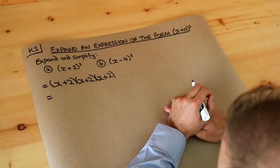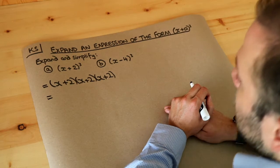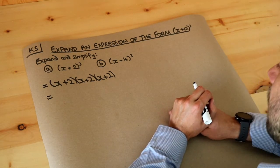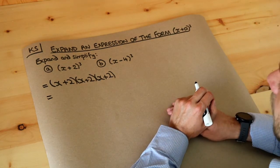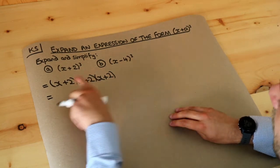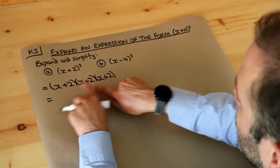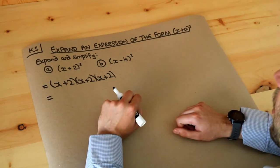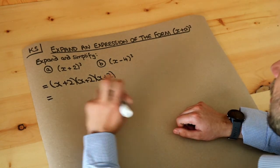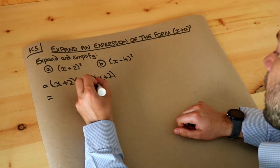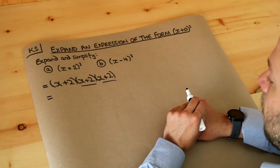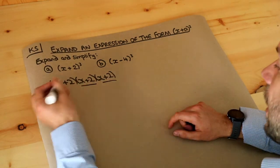Now we know how to expand two brackets, but not necessarily three. What you do is pick two of the brackets — it could be the first and the second, or the second and the third — and multiply those out first. So I'm going to pick the second and the third bracket and multiply those two out.